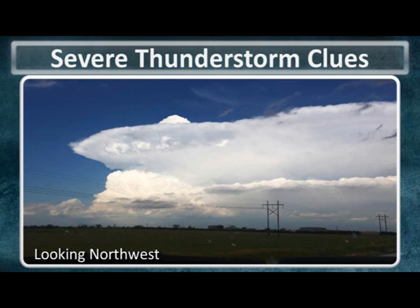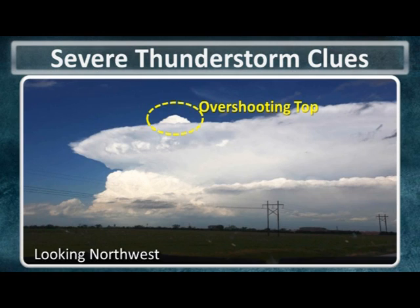From afar, a severe thunderstorm will often feature an overshooting top located above the anvil. This overshooting top results from an intense updraft that penetrates the stable layer of air at the anvil height. Many times, these overshooting tops will be cyclical in nature as they form, collapse, and then redevelop over the course of several tens of minutes. Keep in mind that you'll only be able to see an overshooting top if the storm is sufficiently far away from you.